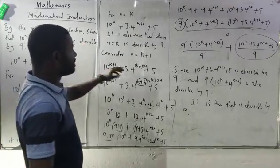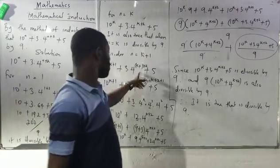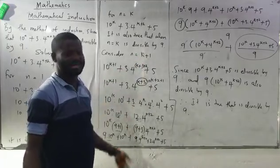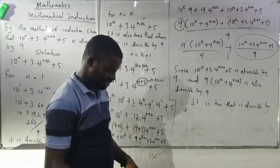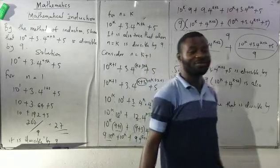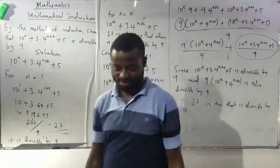We tested for n equals 1, tested for n equals k, and tested for n equals k plus 1. That's all about the proof. Once again, don't forget Follier Solution Academy. Thanks for watching.